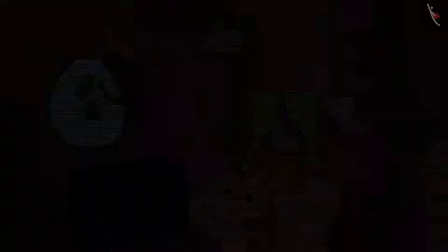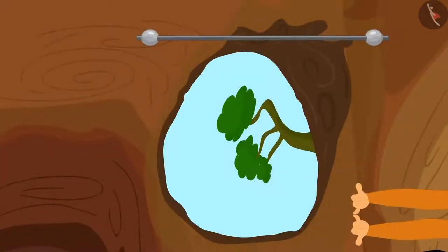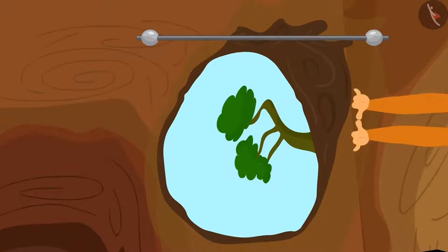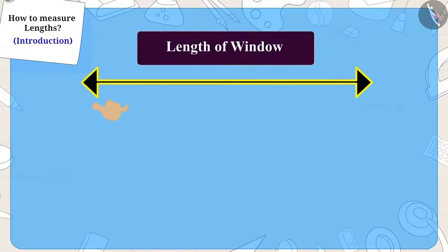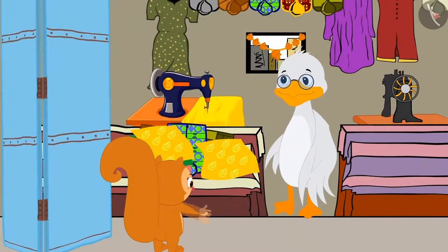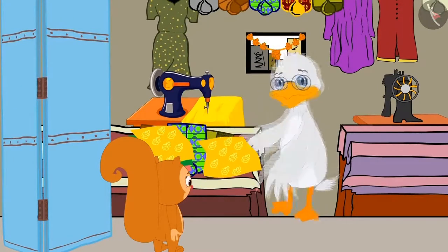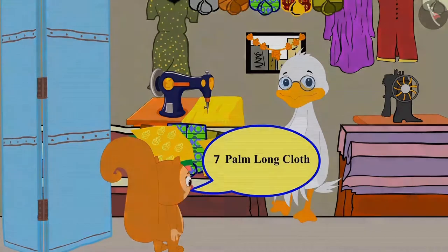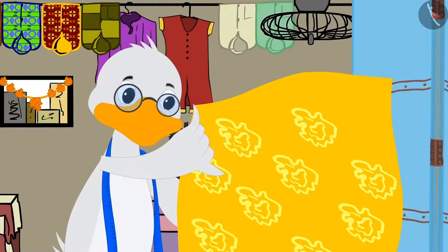Chanda thought of measuring the length of the window with her palm. She quickly measured the length of the window using her palms. The length of the window is equal to seven of Chanda's palms. Chanda reached uncle's shop all excited, chose a material of her choice, and asked uncle to give her a seven palm long cloth. Uncle immediately measured the seven palm long cloth and gave it to Chanda.